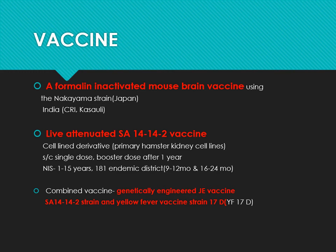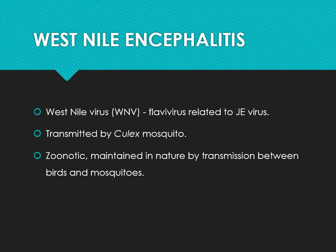A combined genetically engineered JE vaccine has been made combining the SA-14-14-2 vaccine with the yellow fever 17D strain, covering both important viruses. The live attenuated vaccine is preferred. This combined vaccine covers both yellow fever and Japanese B encephalitis.